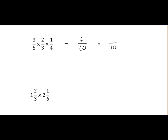So 1 and 2 thirds. Basically 1 is 3 over 3. So it's 3 over 3 plus 2 over 3 is 5 over 3.